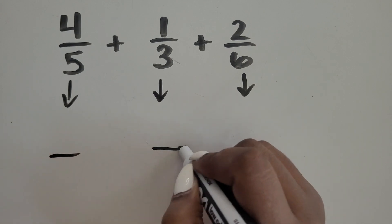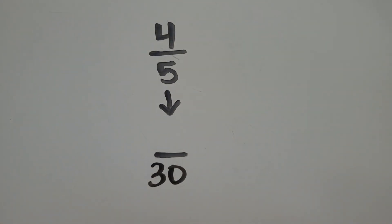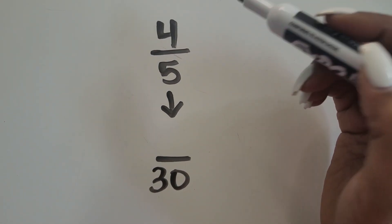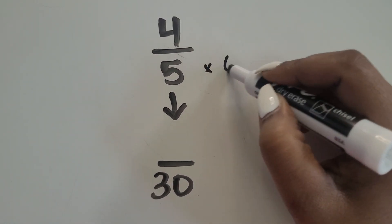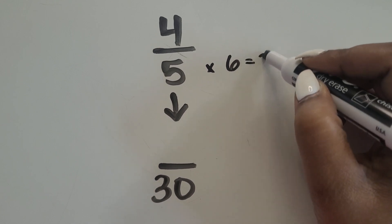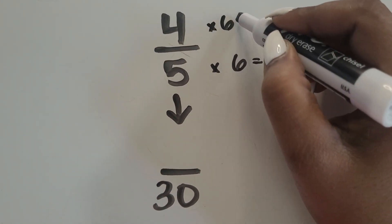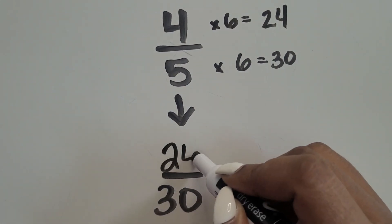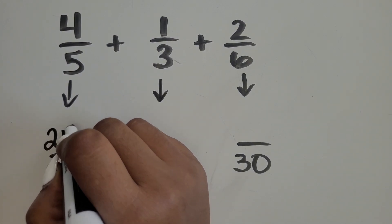We'll use 30 as a common denominator for our new equivalent fractions. Our next step is to find what the new numerators will be. Let's start with 4 fifths. If our new denominator is 30, how many groups of 5 equals 30? 6. 6 groups of 5 equals 30, or 6 times 5 equals 30. Let's do the same for the numerator: 6 groups of 4 equals 24, or 6 times 4 equals 24. Our equivalent fraction of 4 fifths is 24 thirtieths.